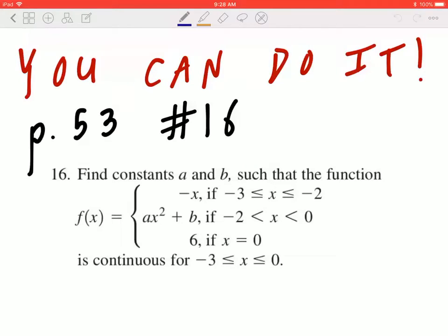Hi everyone, let's take a look at number 16 on page 53. Find constants a and b such that the function f of x equals negative x if x is between negative 3 and negative 2 inclusive, ax squared plus b if x is between negative 2 and 0 exclusive, and 6 if x equals 0, is continuous for x between negative 3 and 0 inclusive.